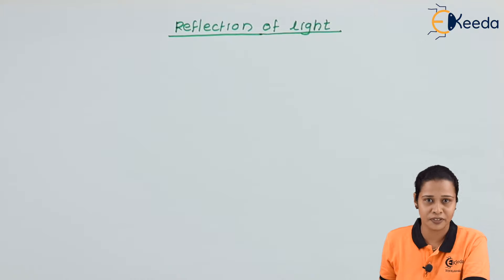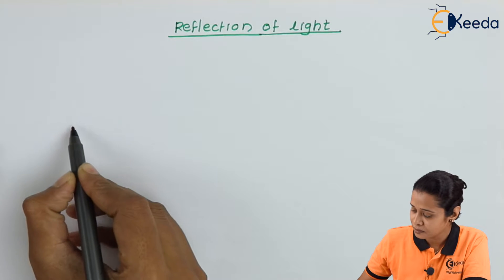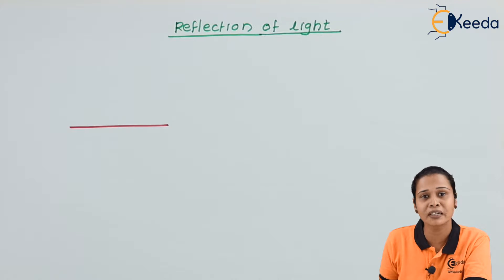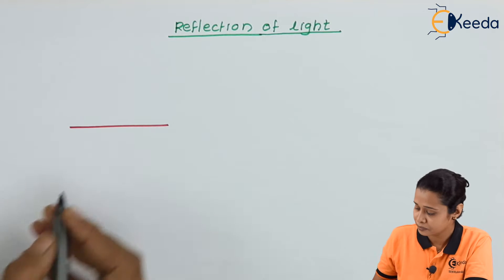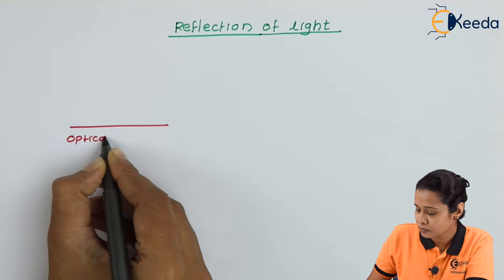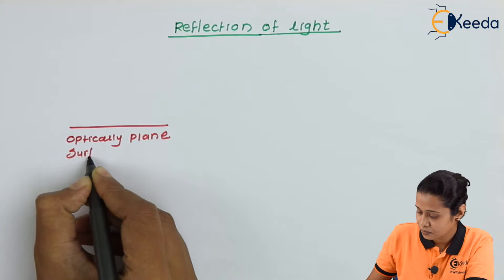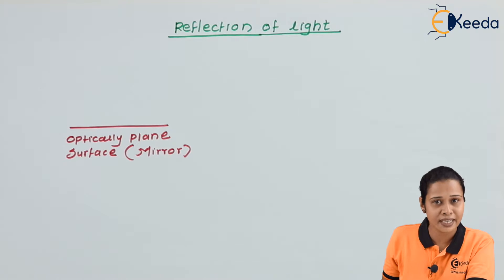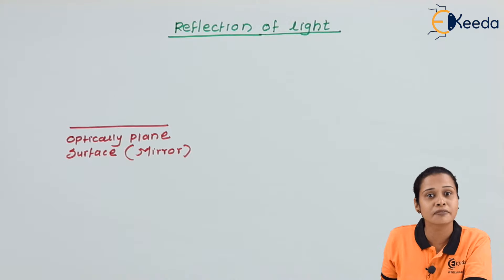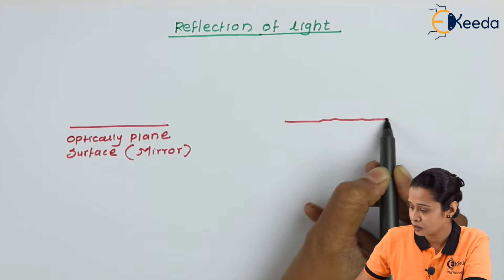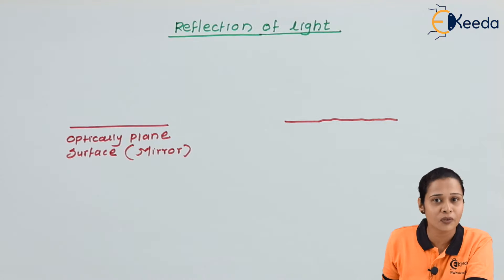Let us consider two surfaces. The first one is an optically plane surface — for example, a mirror. The second surface is an optically rough surface, meaning it is an irregular surface.